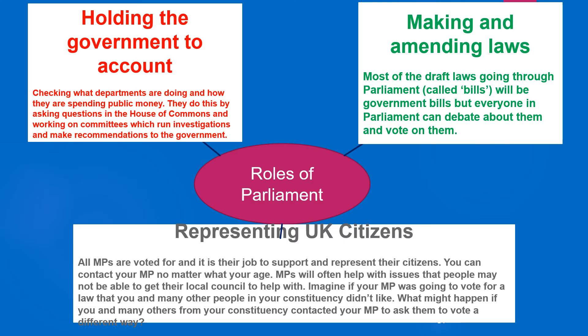What is the role of Parliament? What's it there to do? The first thing is to hold the government to account — they've got to check what the government are doing. It can't be like Nazi Germany, where Adolf Hitler got rid of the other parties and just made his own decisions. Parliament is there as like a security blanket to check up on the government and make sure they're not making stupid decisions.